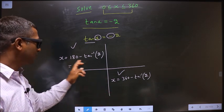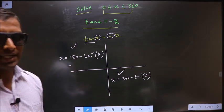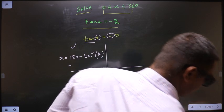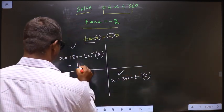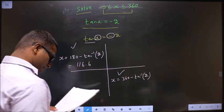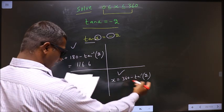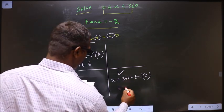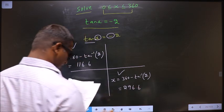Now put this in the calculator. You get 116.6. You put this in the calculator. You get 296.6.